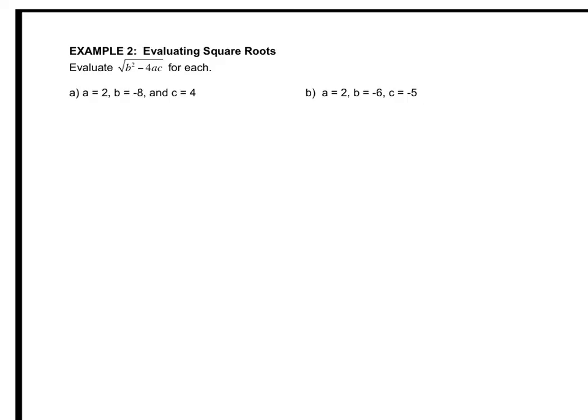In example 2, we're going to use the formula with the square root of b squared minus 4ac, which is something you will actually learn about in chapter 9 — something special we'll talk about when we get there. For now, we're going to use this radical formula and plug our values in for a, b, and c. If you're comfortable, pause the video and give it a shot on your own; if not, let's do it together.